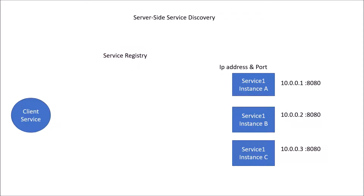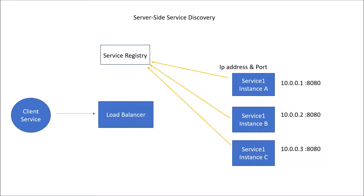In server-side service discovery, registration to the service registry remains the same — services register themselves at startup and deregister at shutdown. However, the client service, instead of requesting the service registry directly, sends requests through a load balancer. The load balancer requests the service registry for all available instances, and the service registry returns them to the load balancer. The load balancer then routes the request — depending on the algorithm used — to either service1 instance A, B, or C.